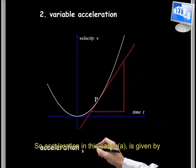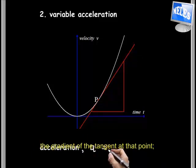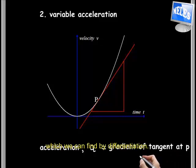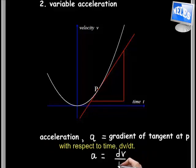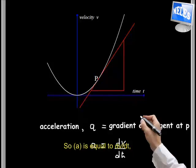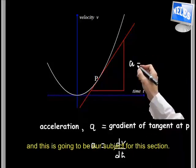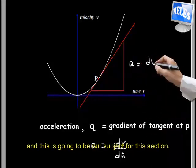So acceleration in this case, A, is given by the gradient of the tangent at that point, which we can find by differentiation. So A is equal to differentiating velocity with respect to time, dv/dt. This is going to be our subject for this section.